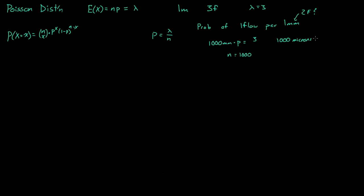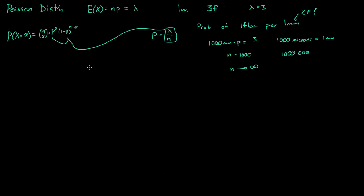So we might go to even a micron, where there are a thousand micrometers per millimeter — that's a millionth of a meter. We can probably feel safe with there being only one flaw per millionth of a meter of wire. But let's just be really safe and have n go to infinity. So we're going to take the limit, and we know p is equal to lambda over n with n equal to infinity.